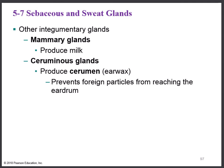Other skin glands include mammary glands in the breast, which produce milk and are covered in the reproductive system. Ceruminous glands in the ear produce earwax — called cerumen — a sticky secretion that lines the ear canal to catch debris and prevent it from reaching the eardrum.